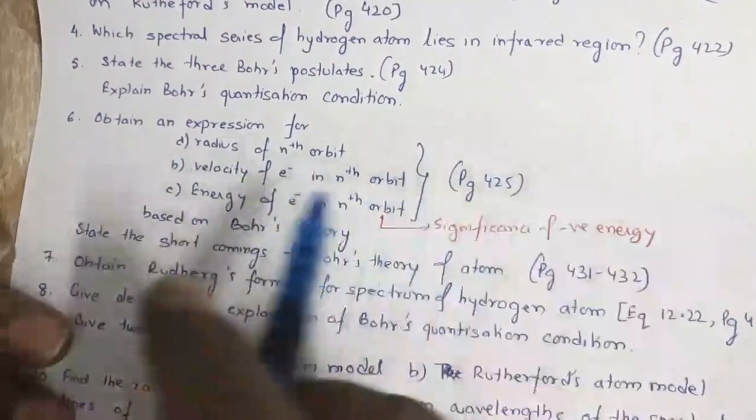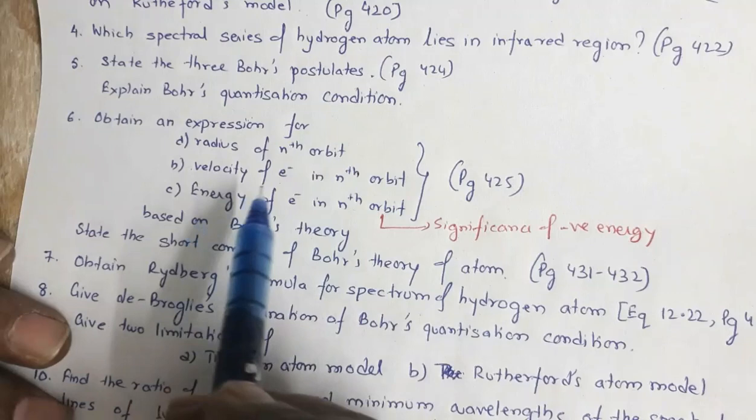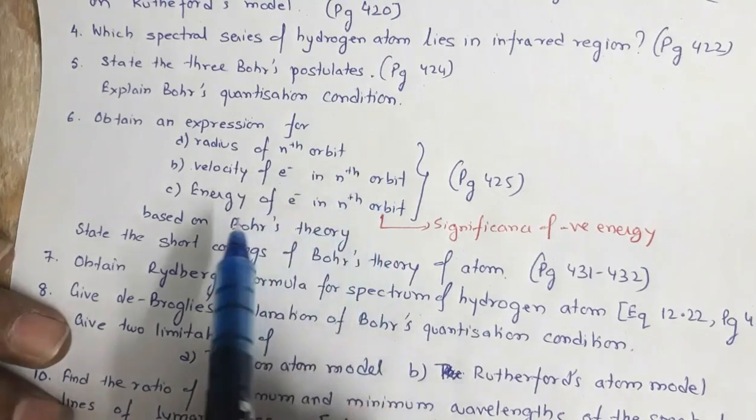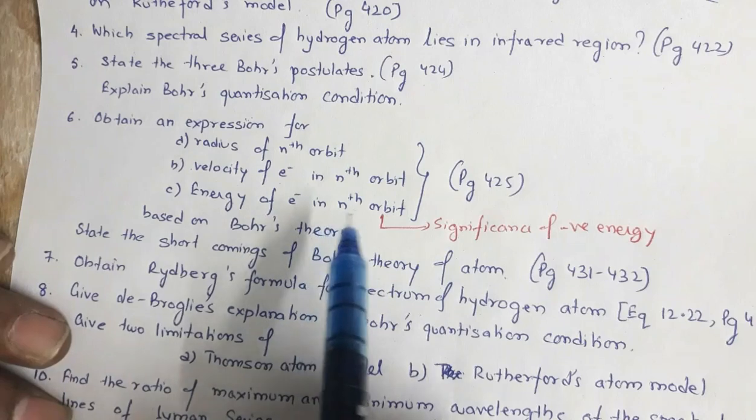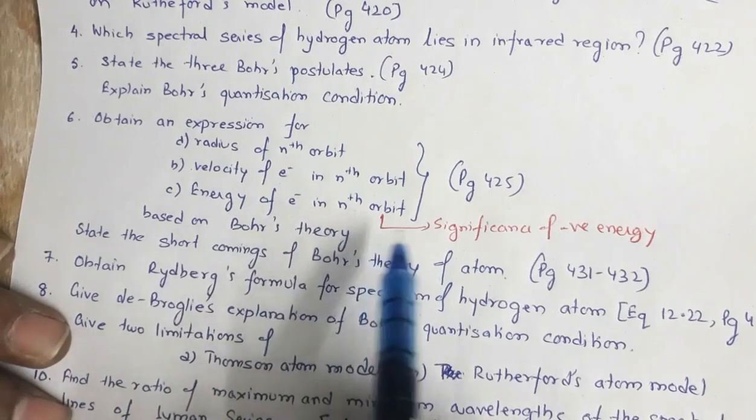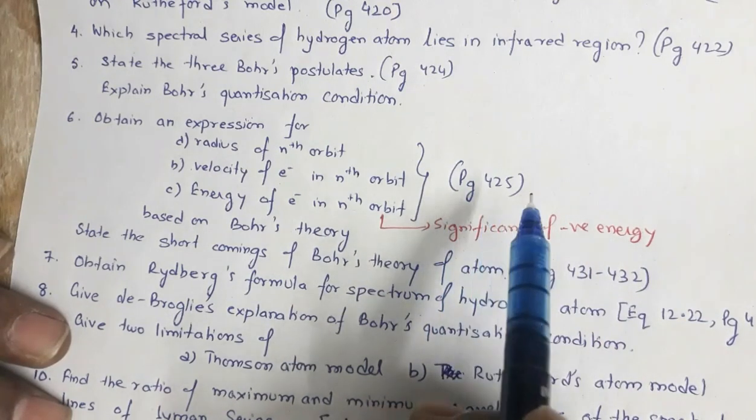From that topic they may also ask you obtain an expression for radius of electron in the nth orbit, velocity of electron in the nth orbit, energy of electron in the nth orbit. Now in energy they may ask you the expression for kinetic energy, potential energy and total energy. And they may also ask you what is the significance of negative energy. So this is given in page number 425.